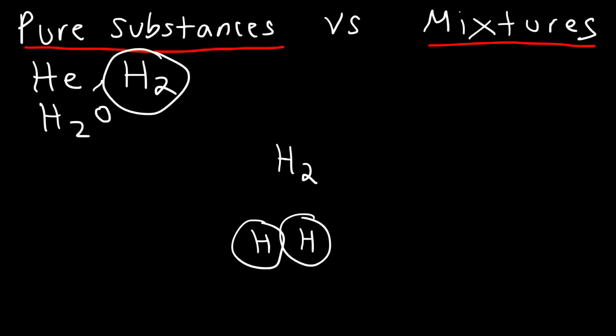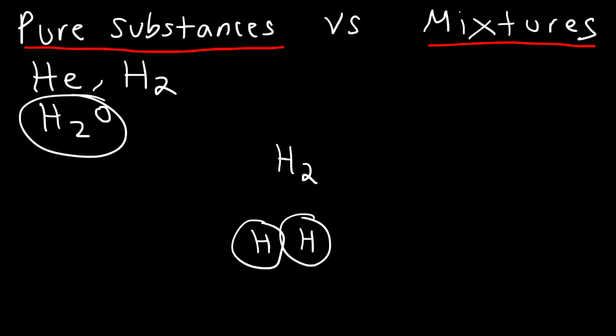Pure elements are made of only one type of atom, like helium or hydrogen gas. Molecules are made up of two or more atoms — it could be the same type of atom, as in hydrogen gas, or different types of atoms, as in water. Whenever you have multiple atoms in a particle, it's a molecule. If a particle has different types of atoms, like water, it's a compound.